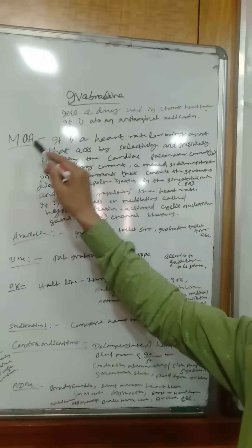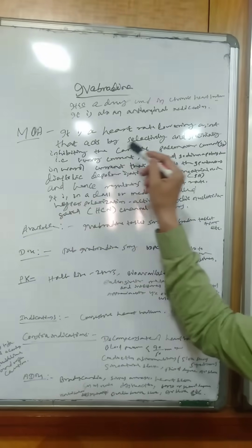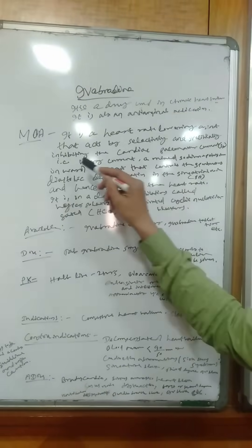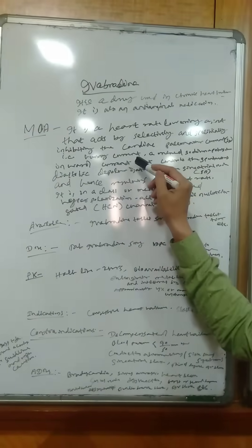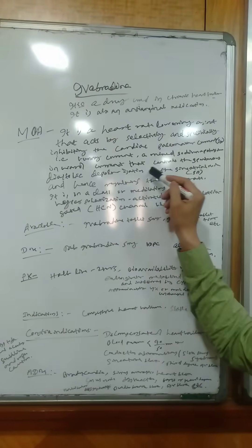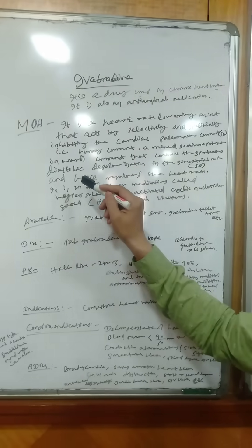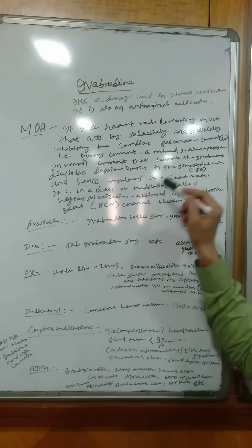Coming to the mechanism of action, it is a heart rate lowering agent that acts by selectively and specifically inhibiting the cardiac pacemaker current, IF, that is funny current, a mixed sodium potassium inward current that controls the spontaneous diastolic depolarization in the sino-atrial node.